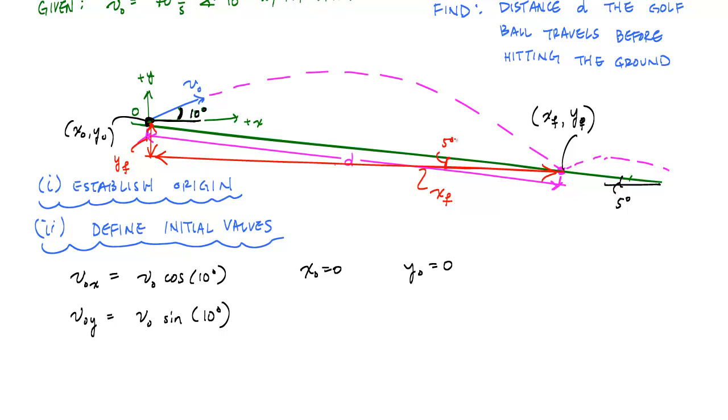And so that just tells me that xf is d cosine of 5 degrees, and yf moves down or in the negative y direction. So this would be minus d sine of 5 degrees. And so I have, once I have these initial values, if you've watched my previous video on just describing projectile motion, every projectile motion problem really just ends up as two equations, two unknowns right here. And so let's go ahead and see how we get there.